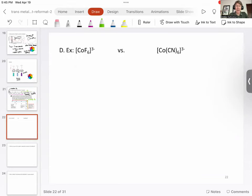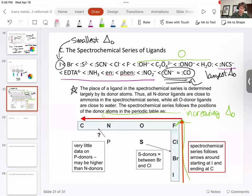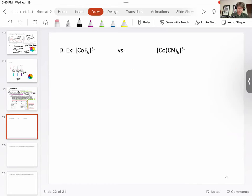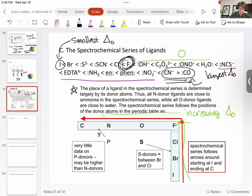Now, how does this impact anything, especially transition metal complexes? Well, let's do something where we compare something with fluorine, which is lower on the spectrochemical series, and cyanide, something that is the strongest, or one of the strongest, tied for strongest.